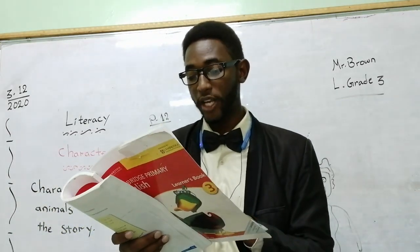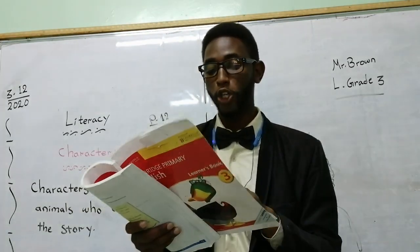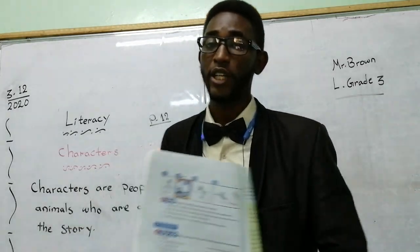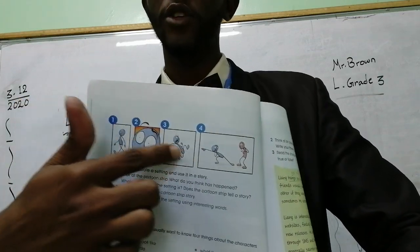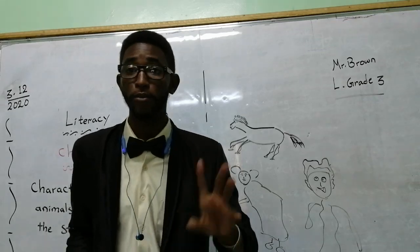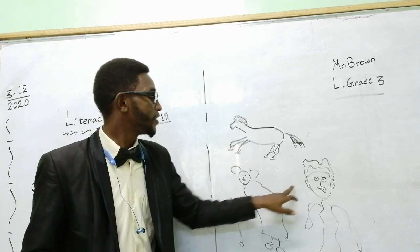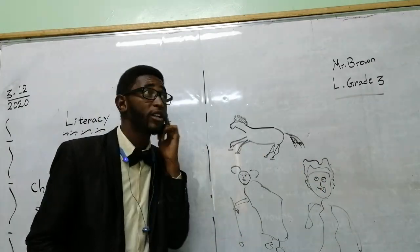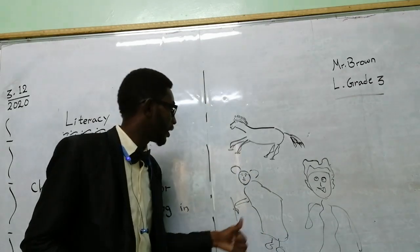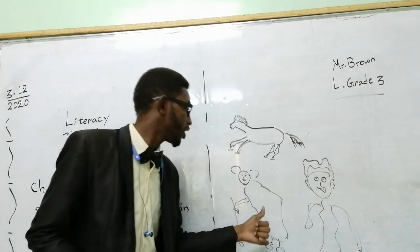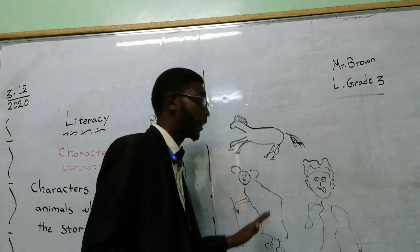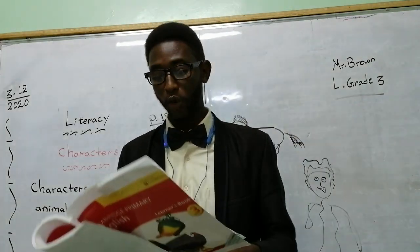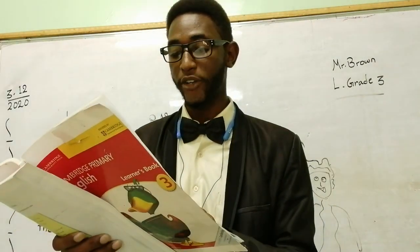Look back at the cartoon strip from the last session. Tell the story to a talk partner and remember to include information about the setting. Give each of the characters a name and include some information about them. Try to give them names from your own mind — for example, you can call the horse Tina, and you can give the old lady a name like Dumana. We call them characters because they have names and are acting in the story.